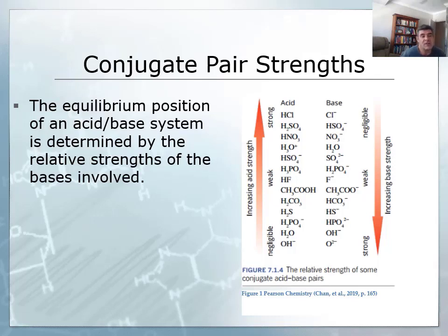The equilibrium position of the acid-base system is actually generally determined by the relative strength of the base. So if we know what the base is in a conjugate pair, then we can get a bit of a sense of the strength of its conjugate acid.